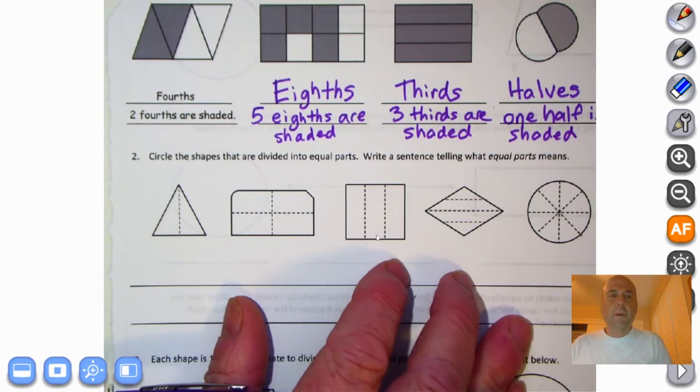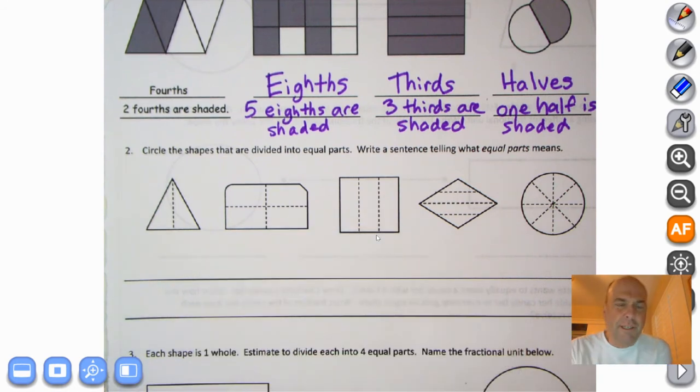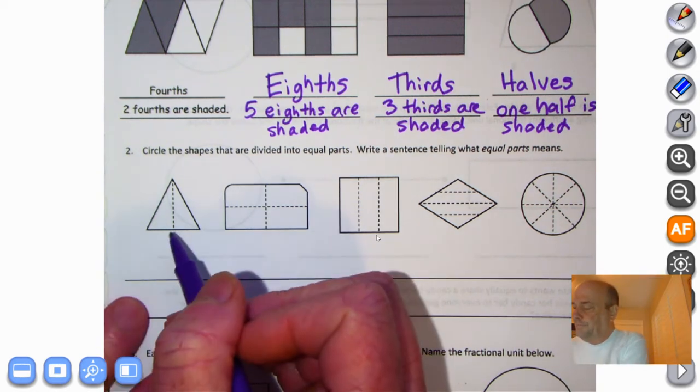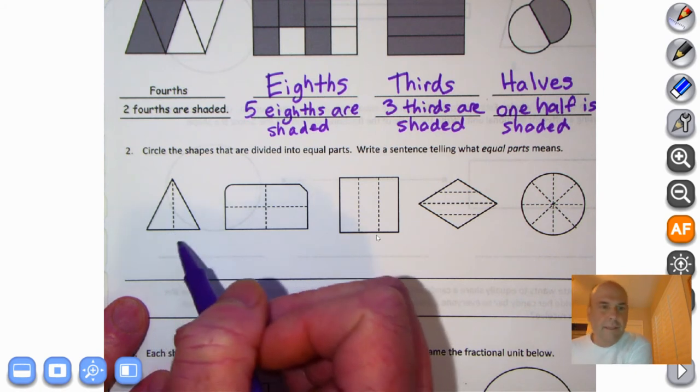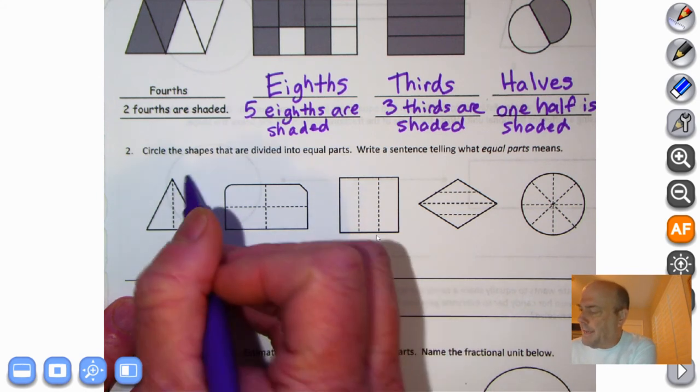Let's go to number two. It says circle the shapes that are divided into equal parts. Write a sentence telling what equal parts mean. So let's find the ones that look like they have equal parts. Well, does that look equal? I would say so. You could fold it in half and they'd be the same. So we're going to circle that.